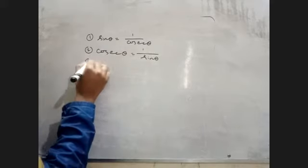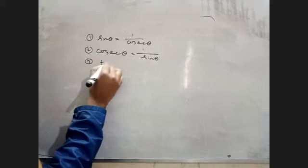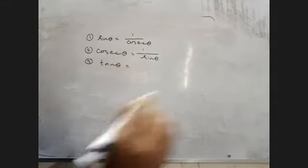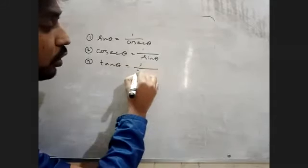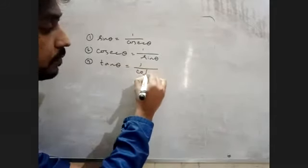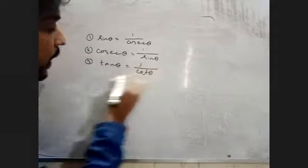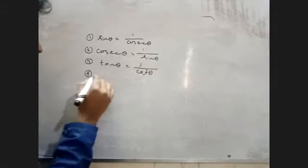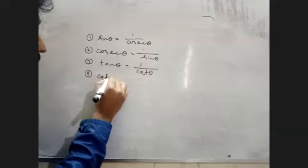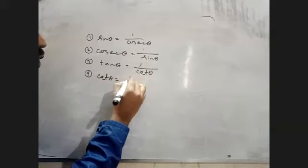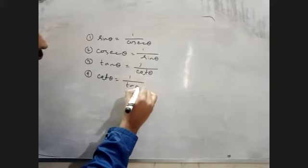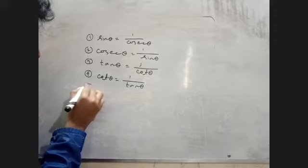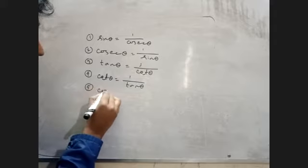Number 3 is tan theta. If you have tan theta, then you have 1 by cos theta. Number 4 is also related to tan theta, which equals 1 by cos theta.